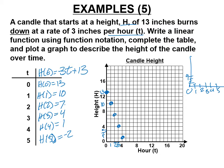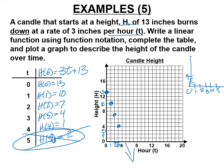Draw a line through the points with an arrow at the end. But when we apply linear functions to the real world, we need common sense. At hour 5 the function gives negative 2 — would the candle burn through the table and go negative 2 inches? No. So we stop the graph at zero because the candle can't burn below the table. No arrow going down.